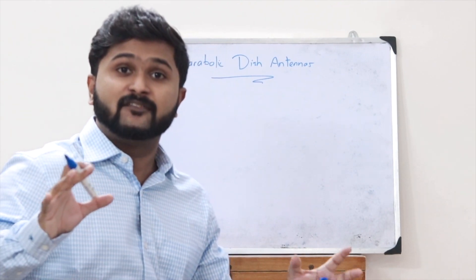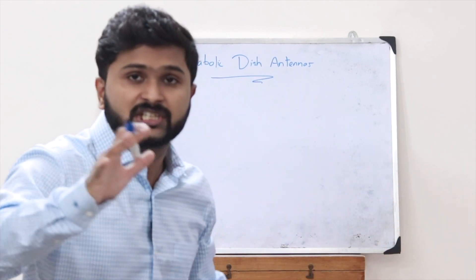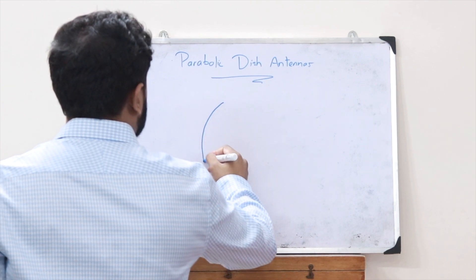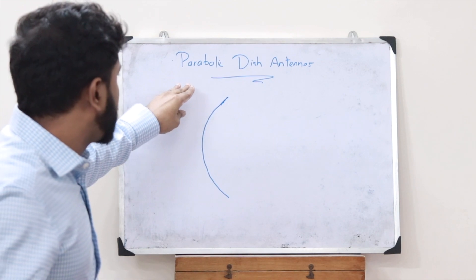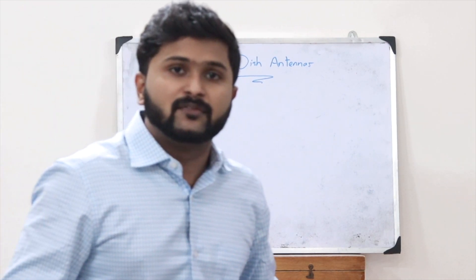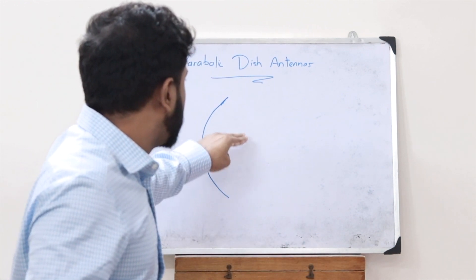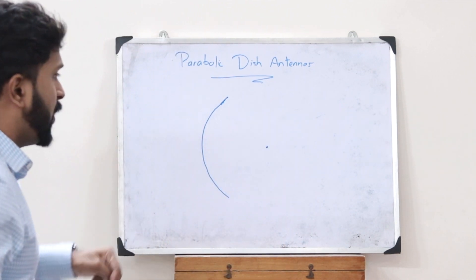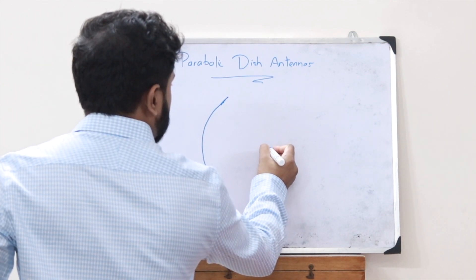Now let's construct a parabolic dish antenna. We need a parabolic reflector, so first let us take one. Now the next thing is that we need to place a point source at the focal length of this parabola, so we place a point source here at the focal point.